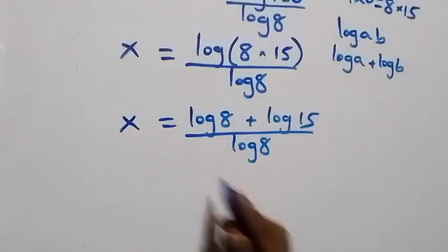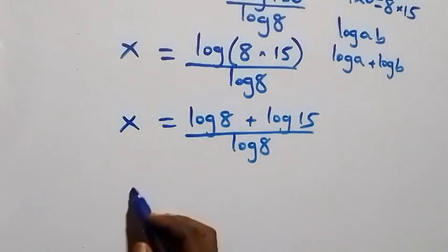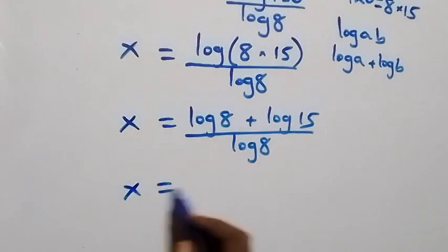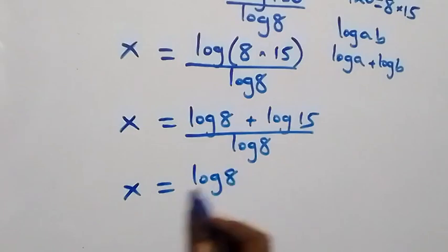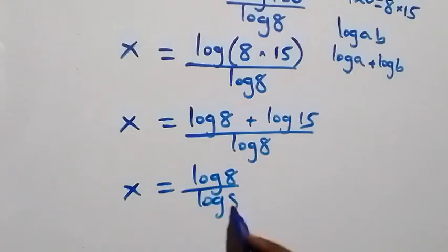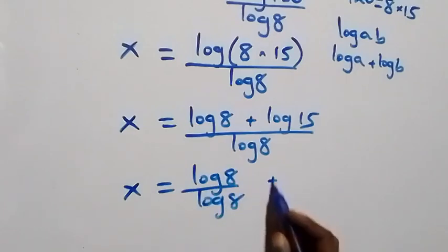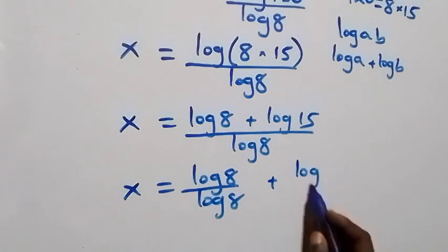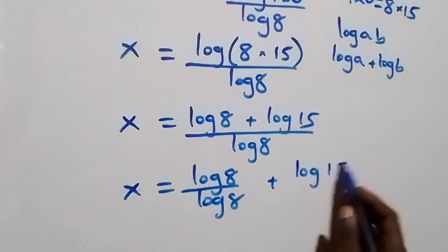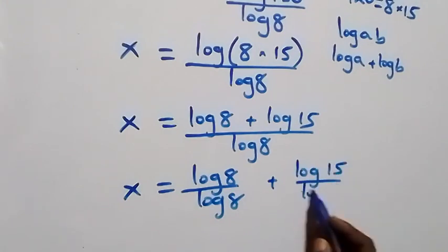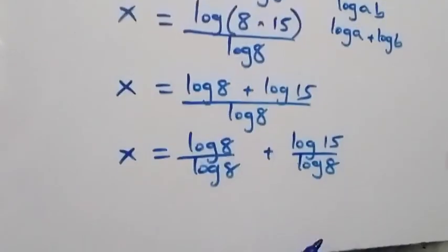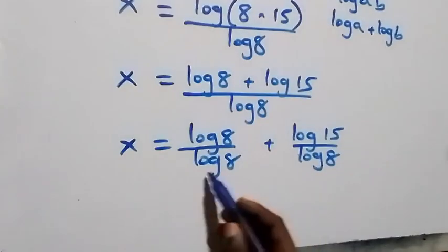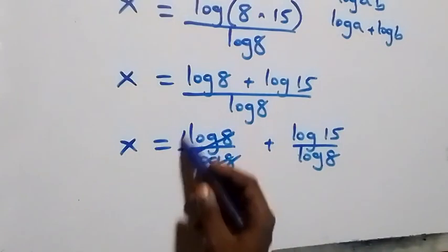We separate this into two fractions: x equals log 8 over log 8 plus log 15 over log 8. The log 8 over log 8 cancels to give 1, so x equals 1 plus log 15 over log 8.